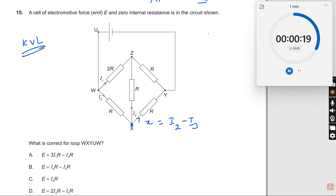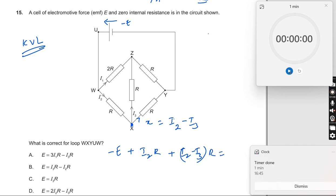Let us start the equation. Now the current, let me assume the EMF here is minus E. So therefore, minus E plus I2 into R plus I2 into R plus I2 minus I3 into R should be equal to 0. We already crossed one minute. Let us continue.